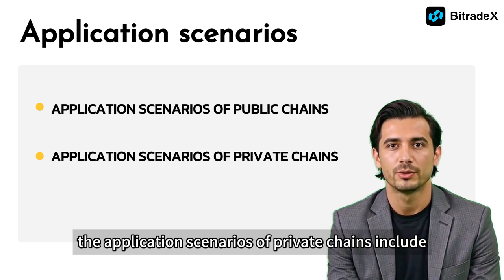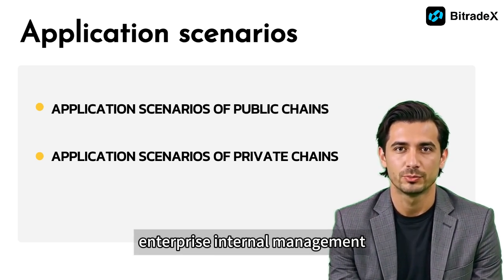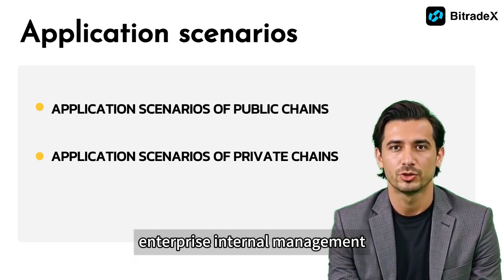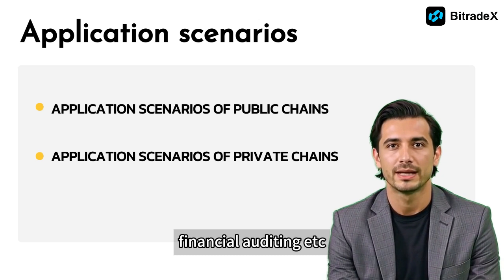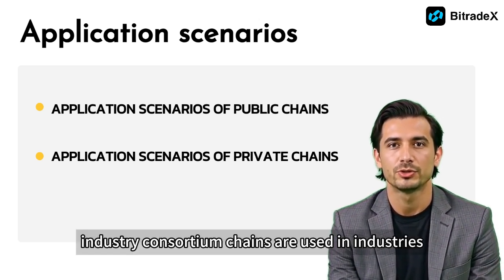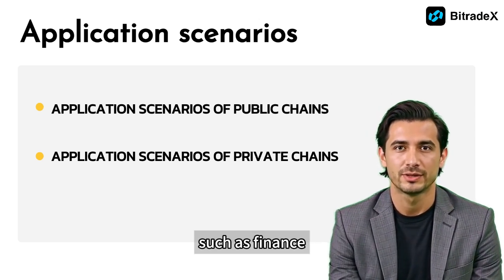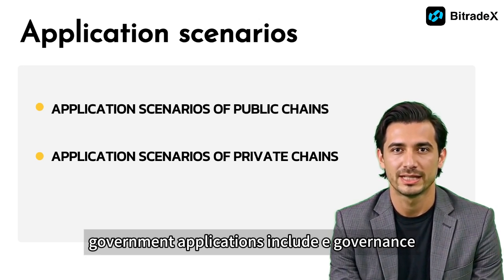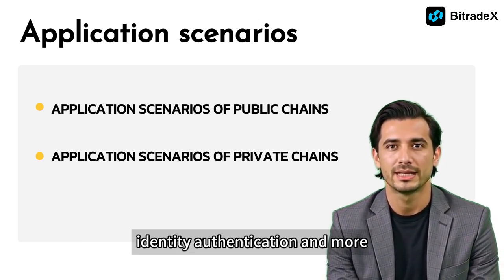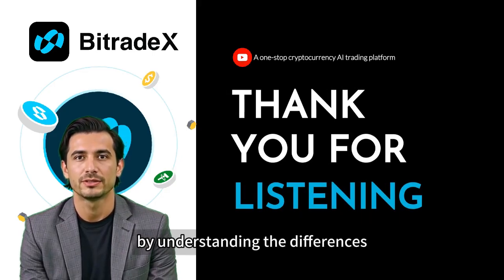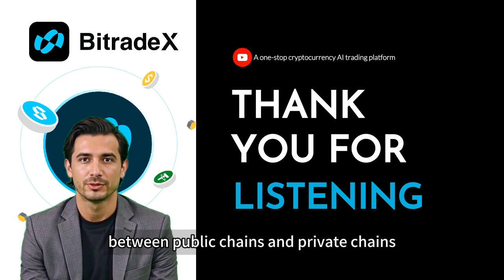The application scenarios of private chains include enterprise internal management, industry consortium chains, and government applications. Enterprise internal management includes supply chain management, financial auditing, etc. Industry consortium chains are used in industries such as finance, healthcare, and logistics for collaboration. Government applications include e-governance, identity authentication, and more.